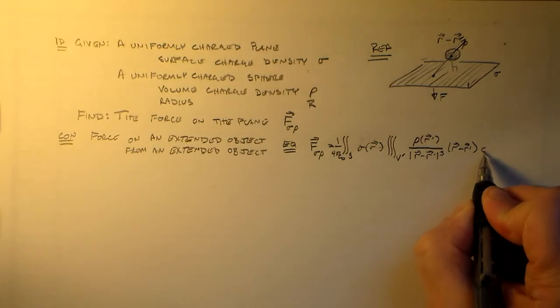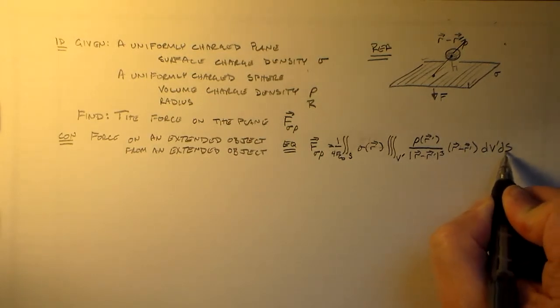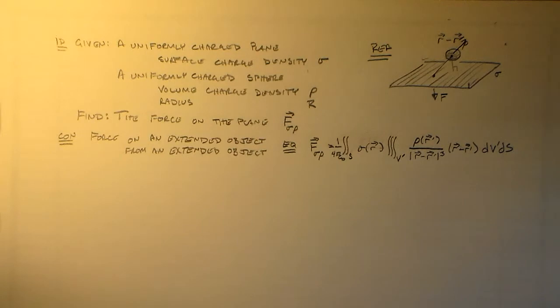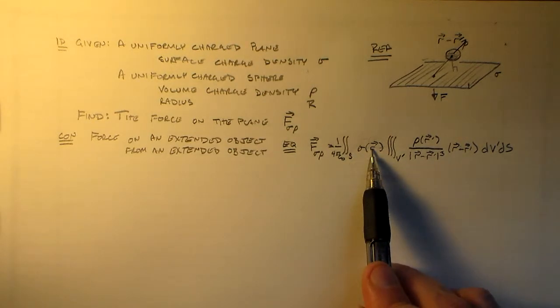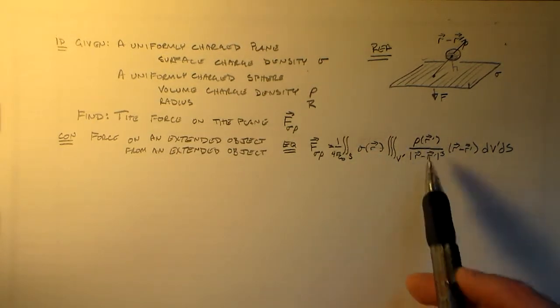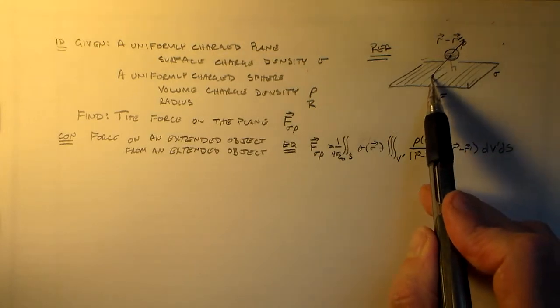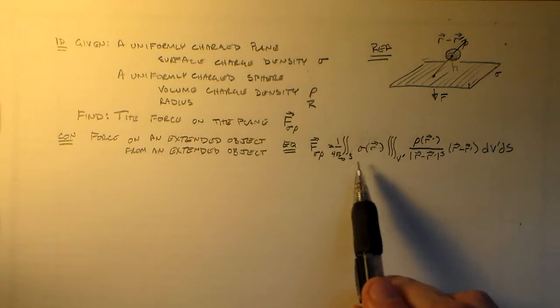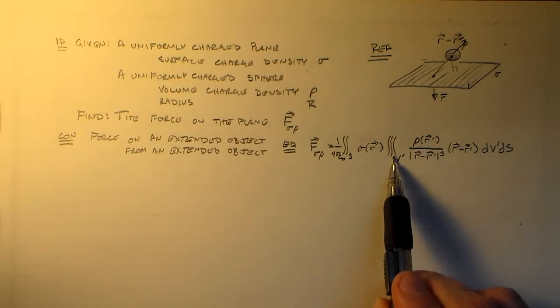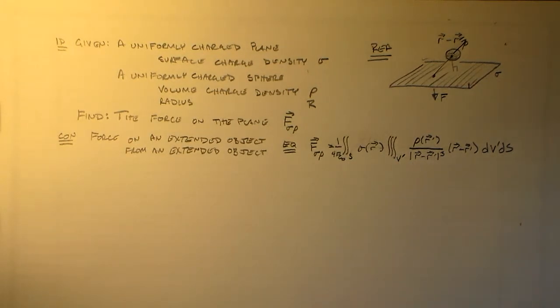And I need that constant, one over four pi epsilon not out in front. I could put it here, but I don't want it there. And then we go ahead and we integrate over the volume and the surface. So for each point on the surface, we have to do an integral for every bit there. So that basically means we have five variables in here, a double integral here and a triple integral here to integrate over. That doesn't sound so good, does it?